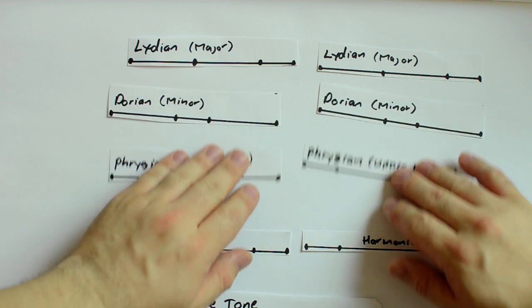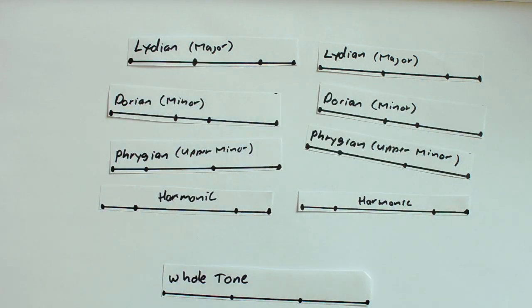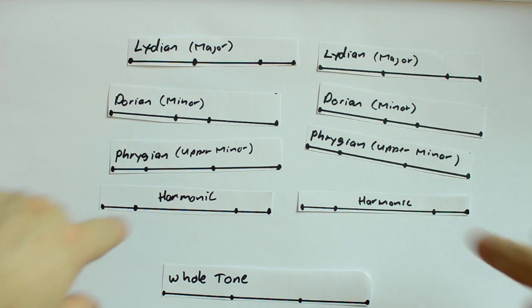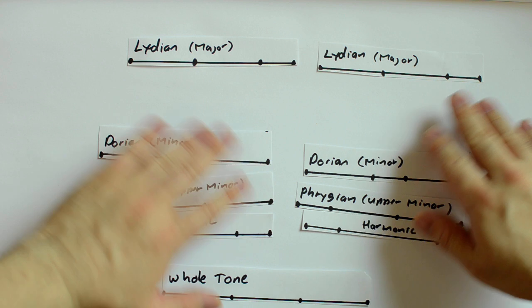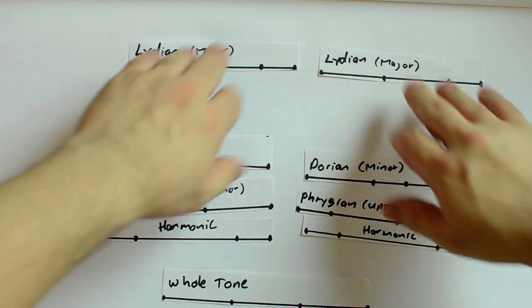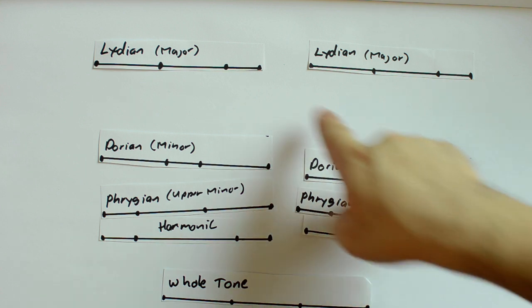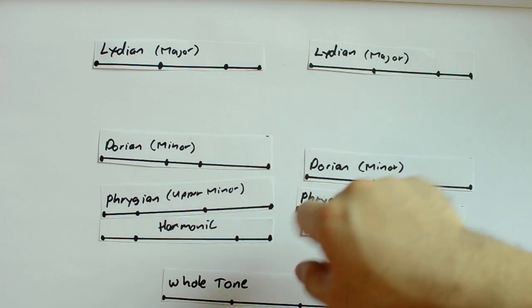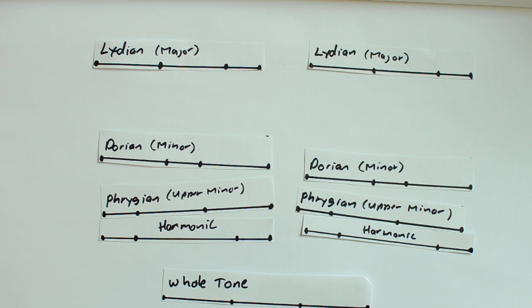So from these building blocks, we can build all seven of the natural modes, plus a bunch of other modes. The major scale — the major mode — is simply two Lydian tetrachords put together. It's a major and a major, and it pushes music up. I'm going to play this on my guitar.